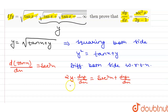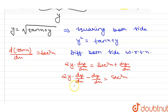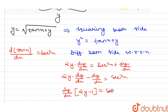So I can write: 2y times dy/dx equals sec²x plus dy/dx. Bringing the dy/dx term to the left-hand side gives minus dy/dx, so we have: dy/dx times (2y minus 1) equals sec²x.